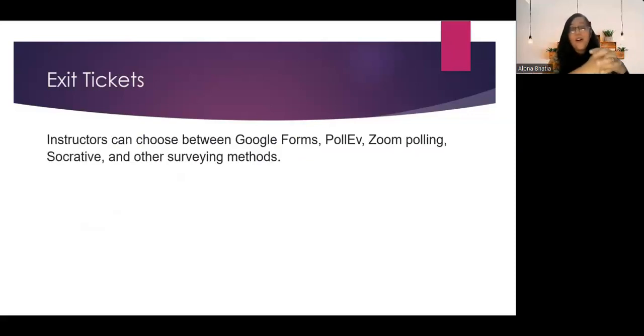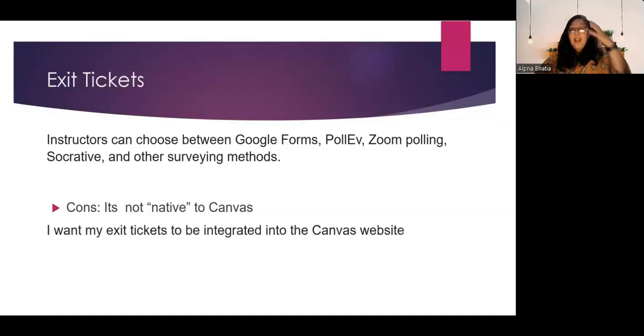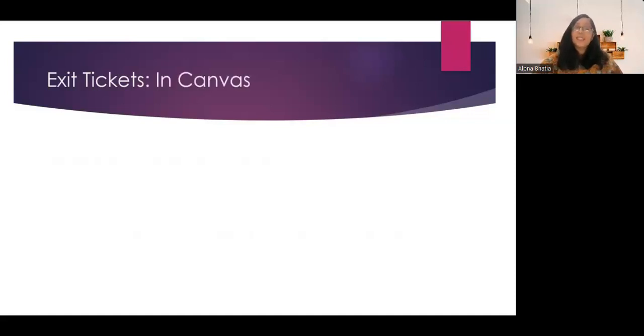If you have a course website, if you are on an LMS, you can use Google Forms, you can use PollEv, Zoom polling, Socrative, and there's lots of surveying methods that you can use. The problem is these methods are not native to Canvas, which is the LMS that I use. And I really don't want to be sending students and myself outside to provide me this information, and then for me to go gather this information. I want my tickets to be integrated into the Canvas modules, especially because I can use their SpeedGrader facility if it's integrated in there. But the biggest pro of using PollEverywhere, Zoom polling, Socrative, is that this can be anonymous. But mostly, I use exit tickets in Canvas.